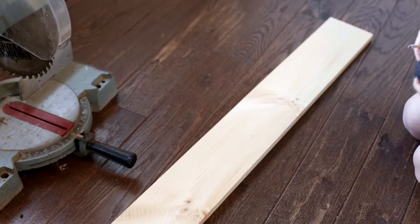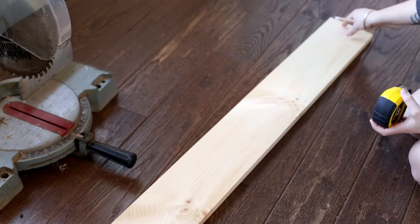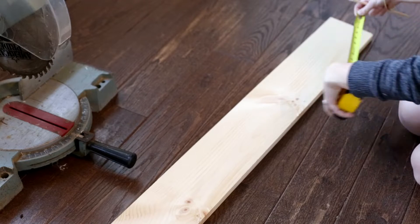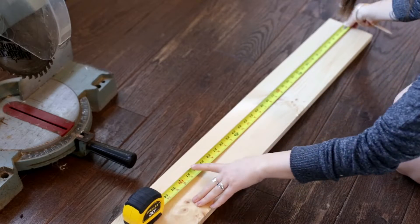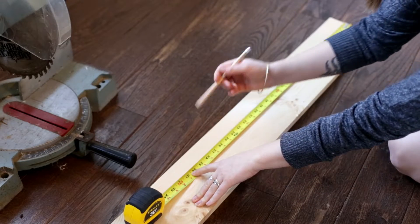First, you're going to measure the space between the two walls where you want the shelves to go. After you have your measurements, you're going to mark them out on your board, measuring just slightly less than the measurement between your two walls.